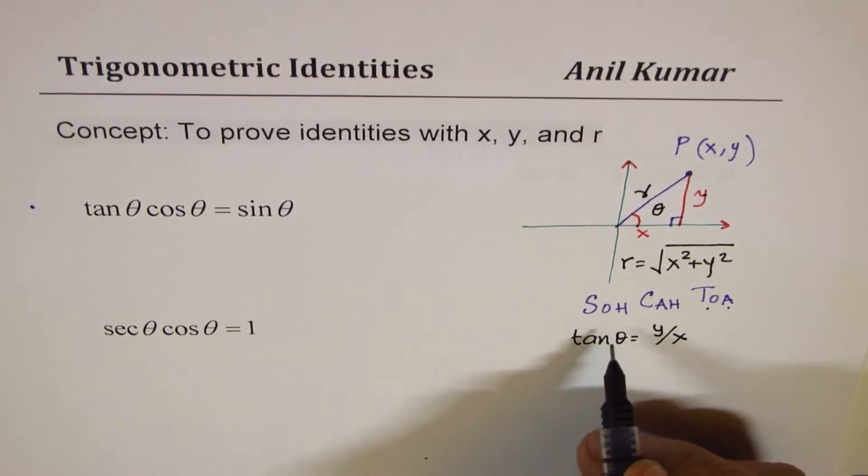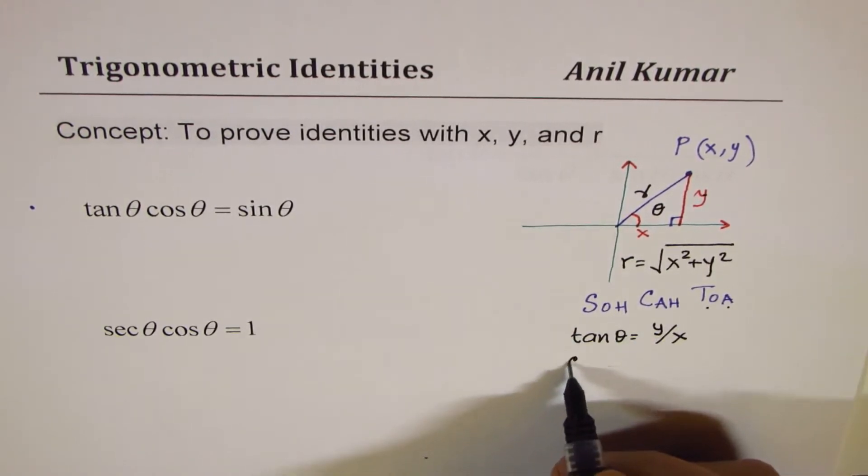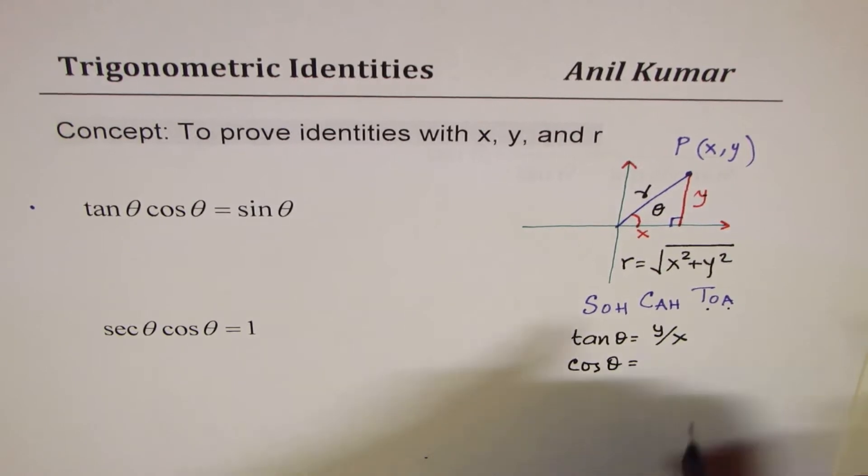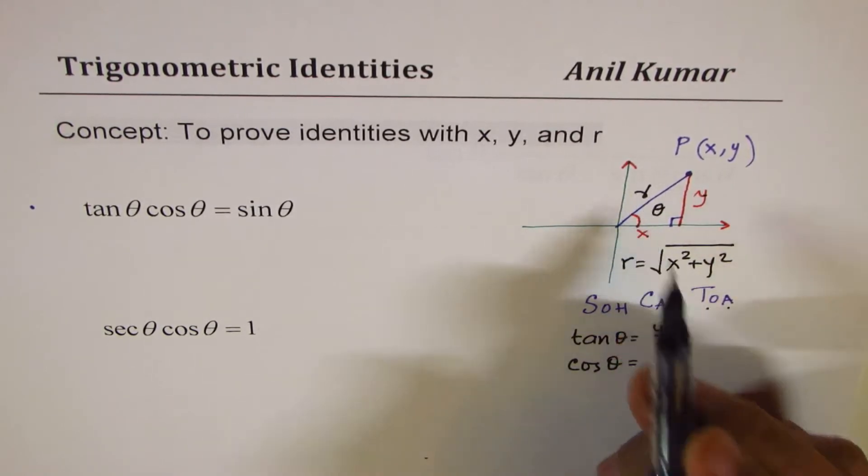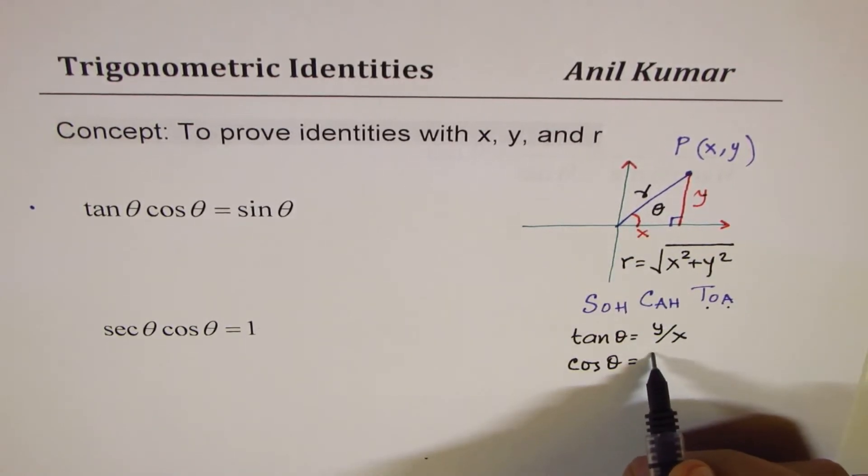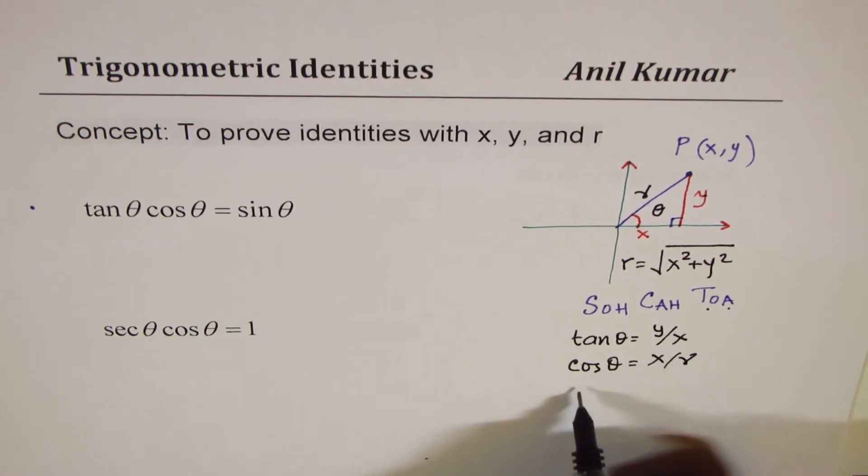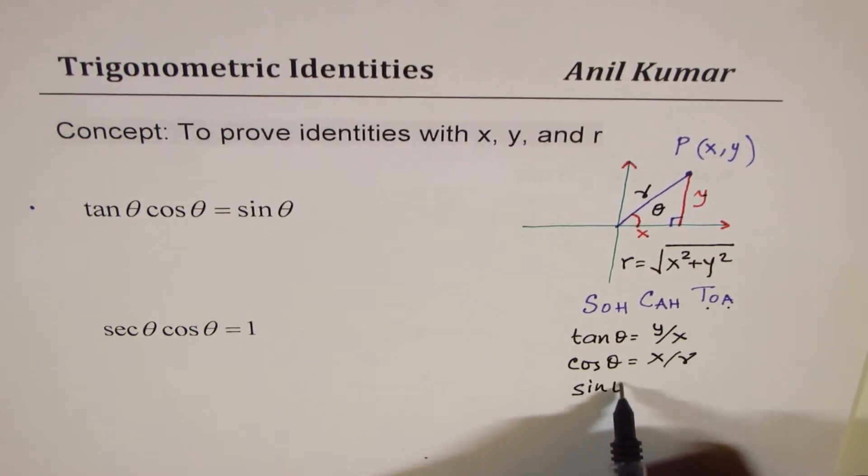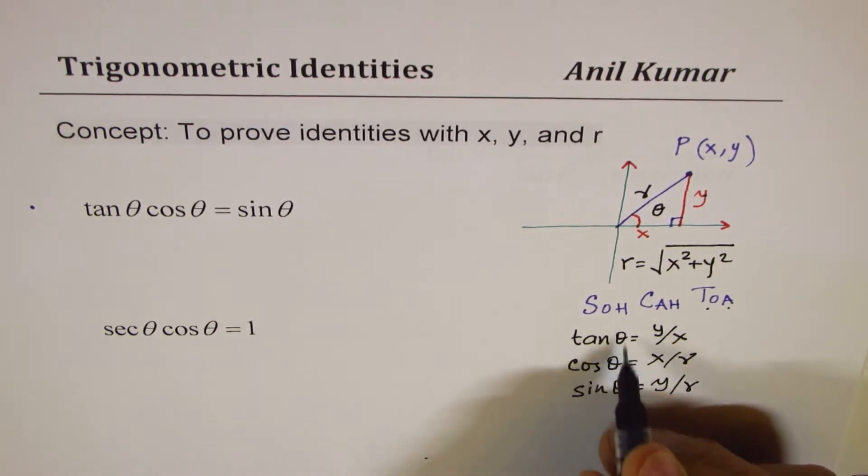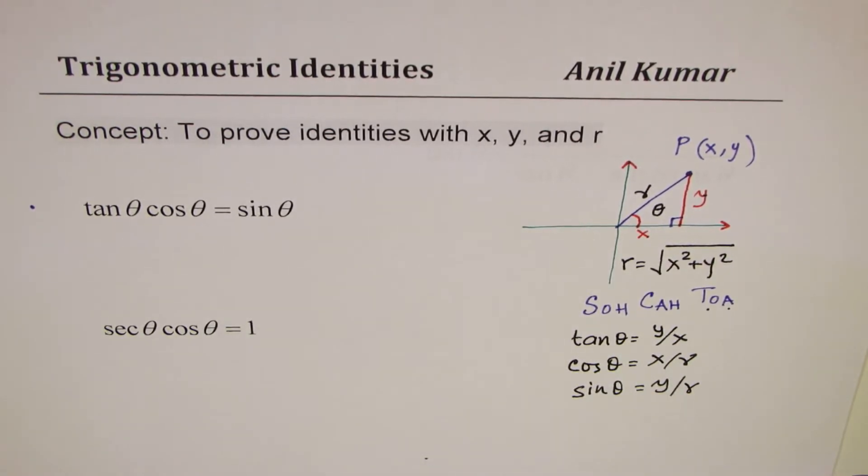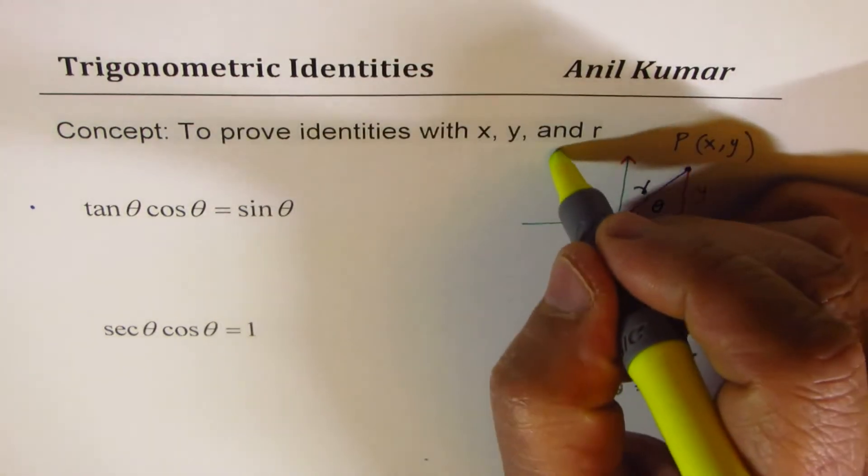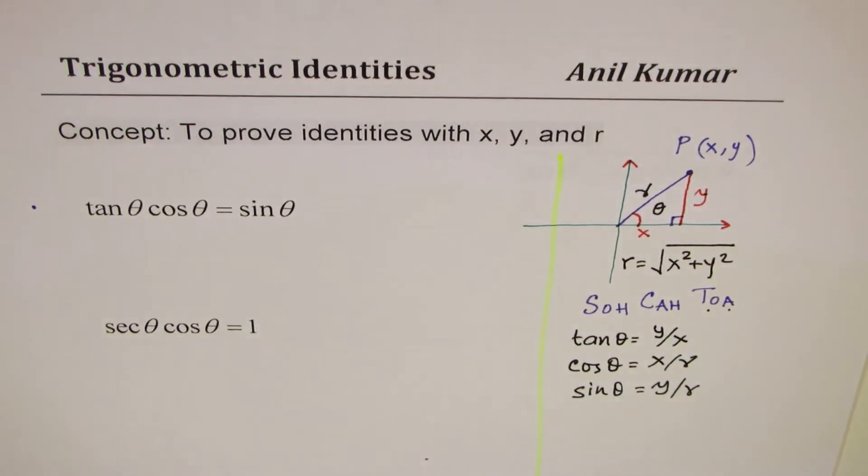Now, what is cos theta? Cos theta is adjacent over hypotenuse, so it becomes x over r, and sin theta is opposite side y over r. So this is what we know from the given triangle. We are going to apply this to prove all the identities.